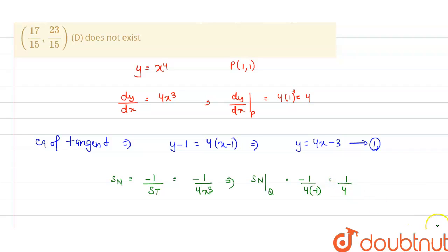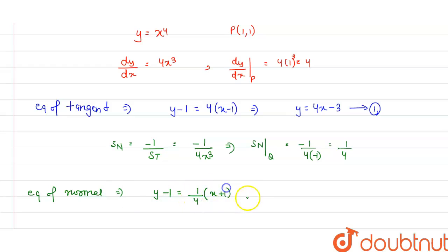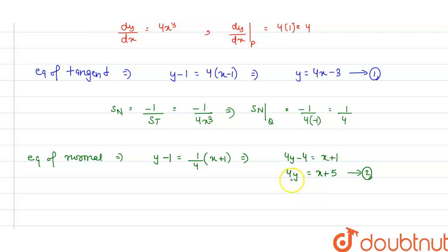Now the equation of the normal at point Q is y − 1 = (1/4)(x + 1), which gives 4y − 4 = x + 1, so 4y = x + 5. Now we have two equations and two unknowns, x and y.